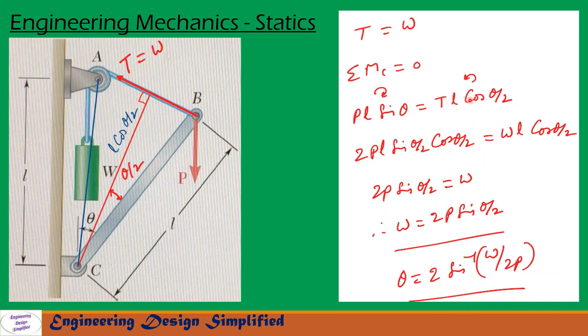So after simplification we get this equation: W equals 2P sin theta by 2. So from this we can write theta equals 2 into sin inverse W by 2P. So this is the equation in terms of theta, W, and P for the bar to be in equilibrium.